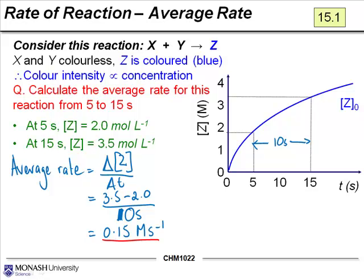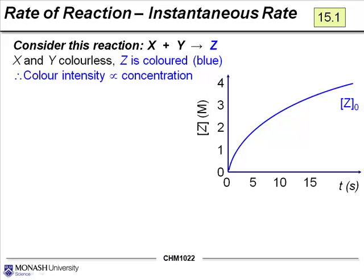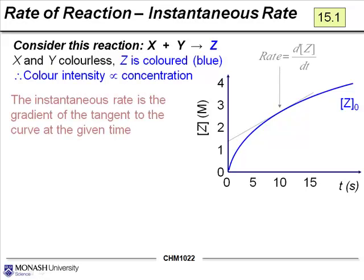In summary, the average rate for this reaction between 5 to 10 seconds is 0.15 moles per second. I put it to you that this value may not be the same if we were to say between, what is the average rate between 10 and 20 seconds. Now, how does this idea of average rate compare to instantaneous rate?